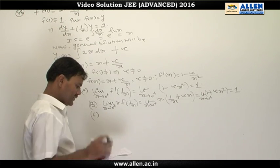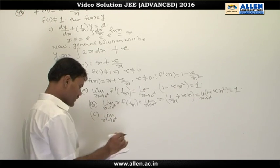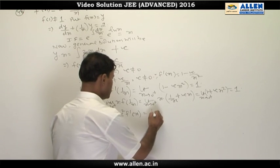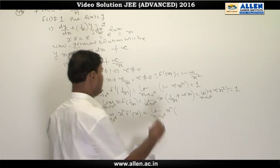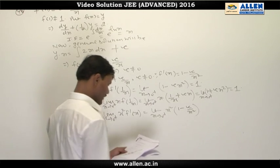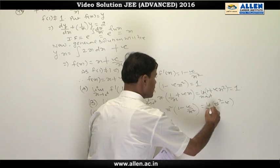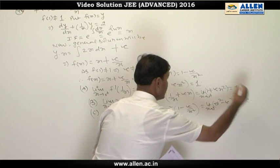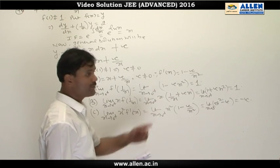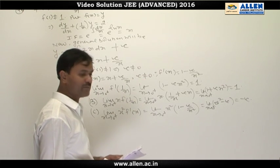Now coming to option C, we have to find the limit as x → 0+ of x²·f'(x). This equals the limit as x → 0+ of x²·(1 - c/x²) = x² - c. Taking the limit as x → 0+ gives -c, which depends on c. Since c can be any real number except 0, we cannot say this limit is 0, so option C is incorrect.